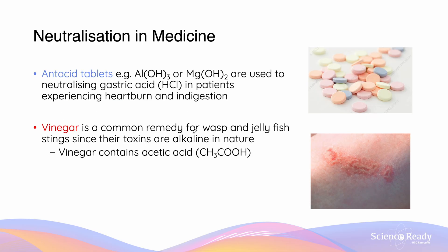In medicine, we use antacid tablets, which are usually Al(OH)3 or Mg(OH)2, to neutralize gastric acid, HCl. So the patient has HCl being refluxed, which is why they experience heartburn and indigestion. We can understand that an antacid tablet is a base because the name itself — antacid — means anti-acid tablet.